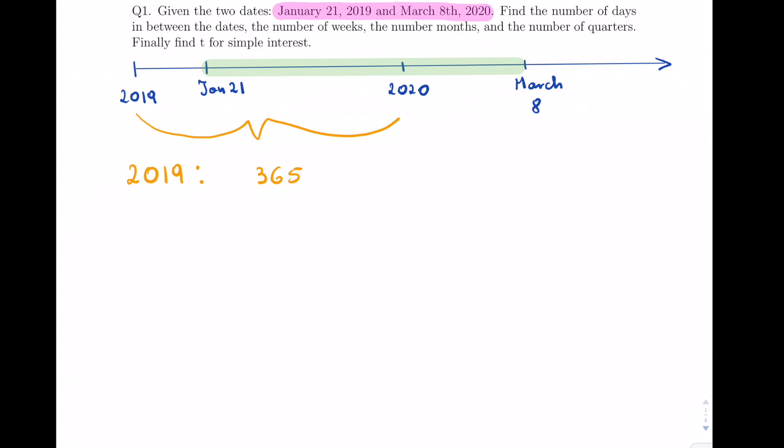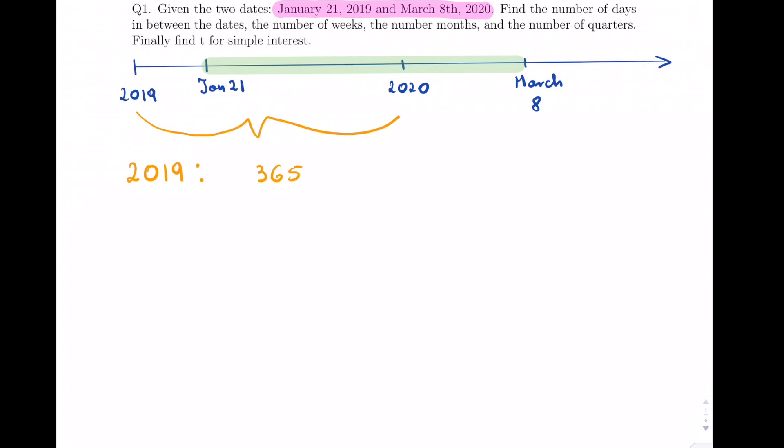We're starting from January 21st, which is the 21st day in the year because it's the first month. If we subtract 365 minus 21, we're going to get 344 days in 2019.